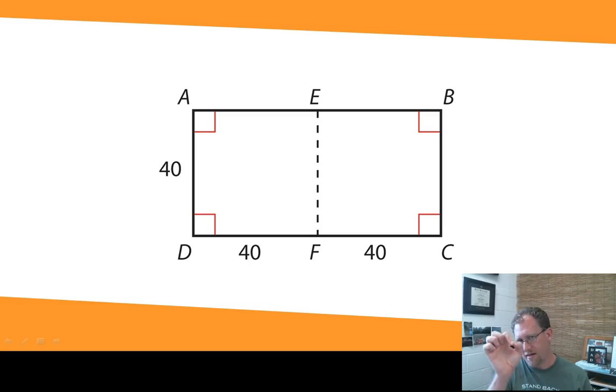But if we were to draw a little dotted line through the middle of this rectangle, we would discover that it's made up of two congruent squares that are 40 feet by 40 feet. And so we could also demonstrate here that 40 feet by 40 feet, 1,600 square feet. That square, A, E, F, D, is congruent to square E, B, C, F. And therefore they have congruent areas. And you could see that visually. Let's move on.